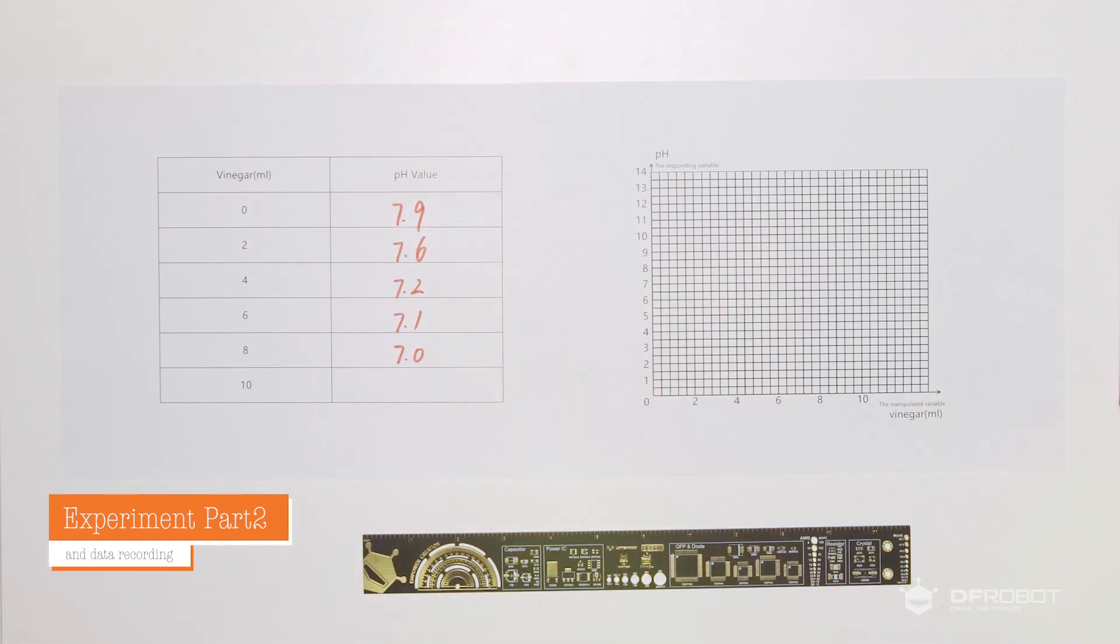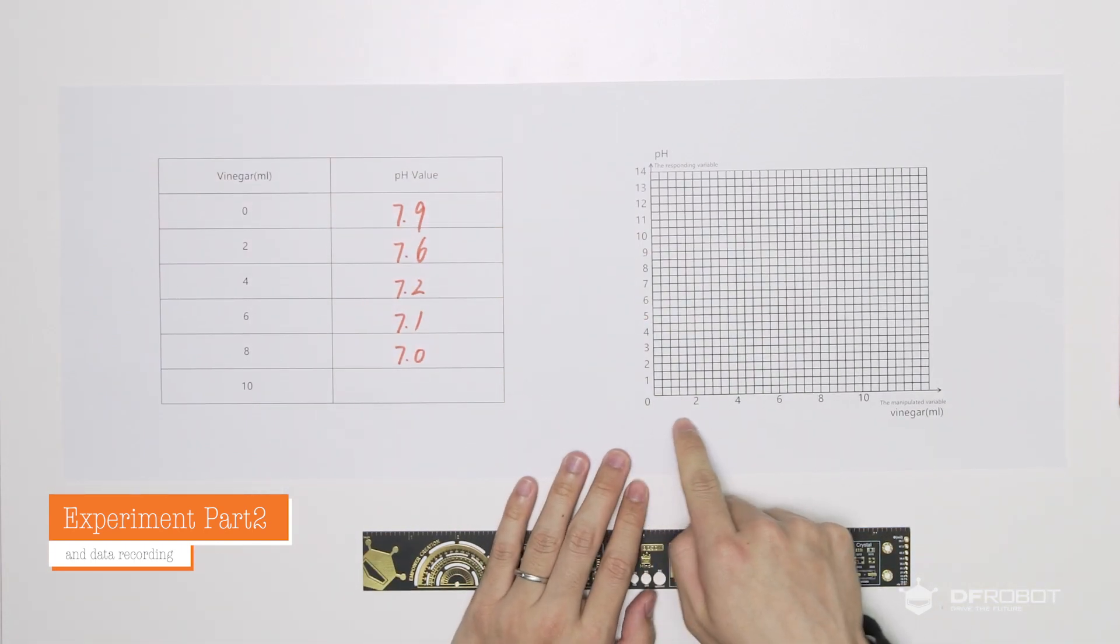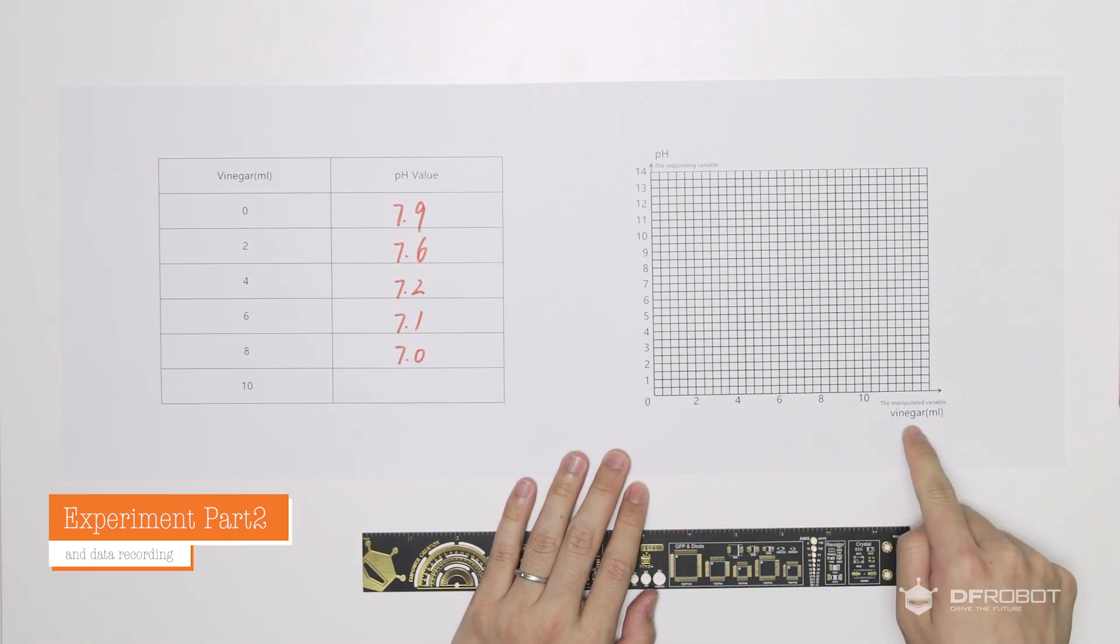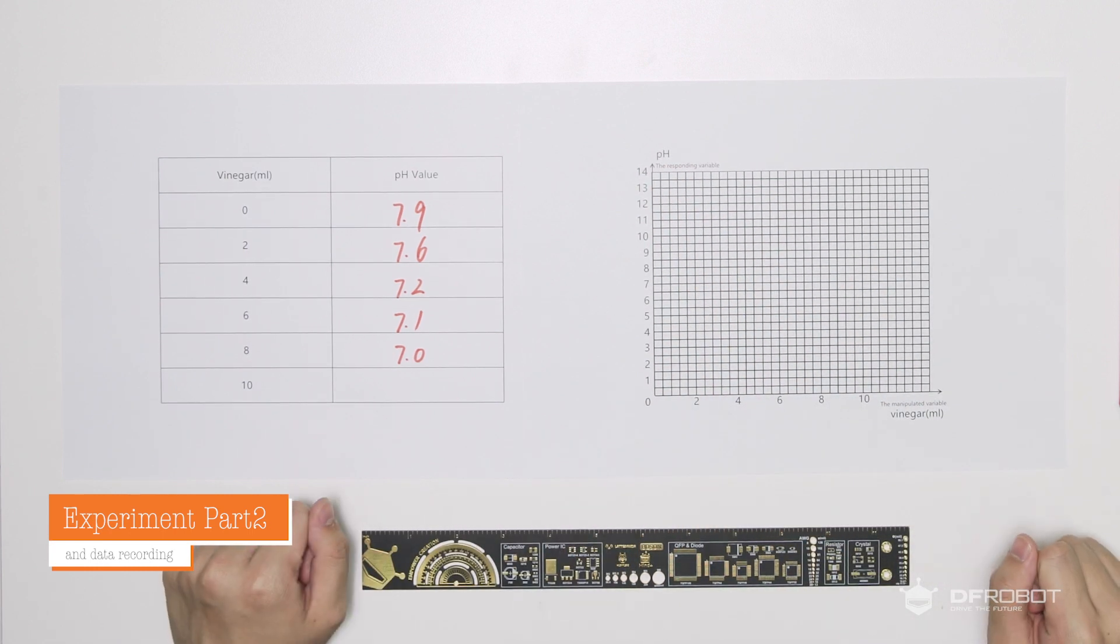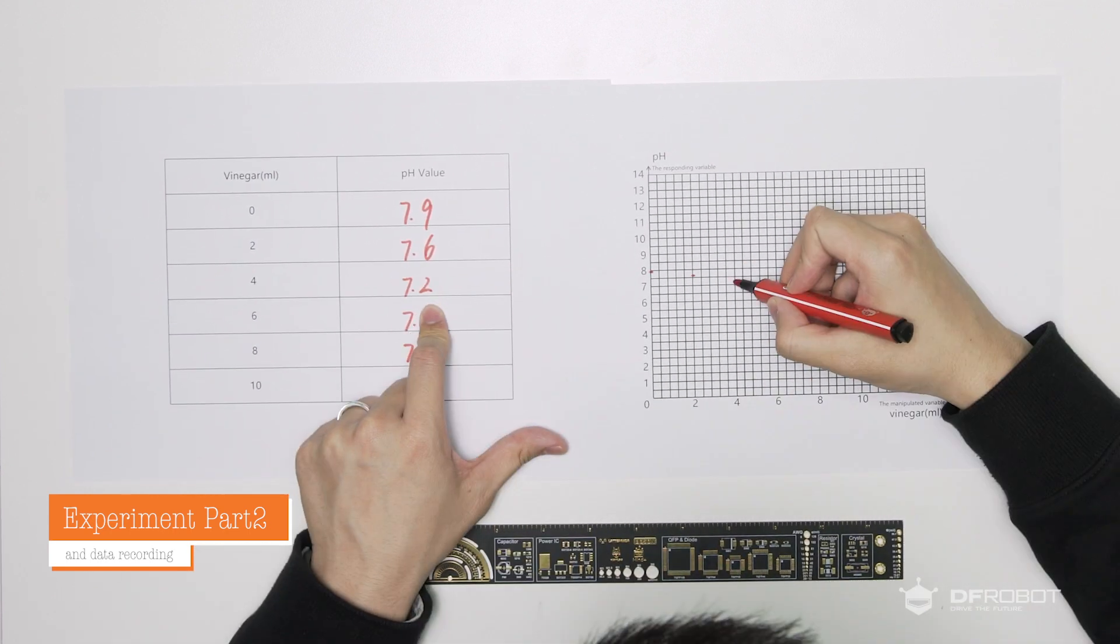Now let's do some analysis on the data recorded. On this grid table, you can see the amount of vinegar is on the x-axis and the pH is on the y-axis. Let's put all sets of data we have into this table and connect all the dots with the red line.